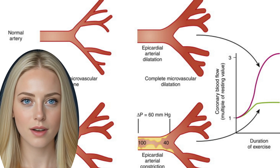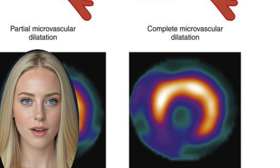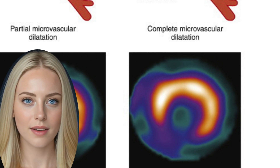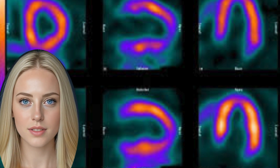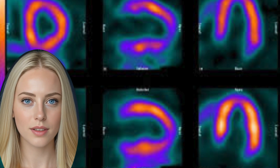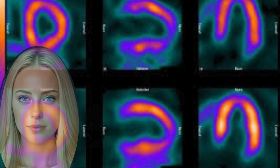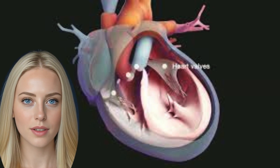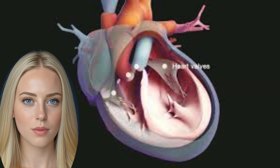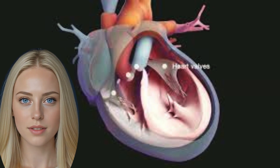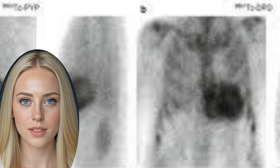The radiopharmaceuticals used for single photon myocardial perfusion imaging include thallium, a potassium analog, and technetium-99m (Tc-99m). The tracers used for positron emission tomography (PET) include oxygen-15, carbon-11, and fluorine-18, which may be coupled to physiologically active molecules such as C-11-labeled fatty acids and F-18-labeled deoxyglucose.